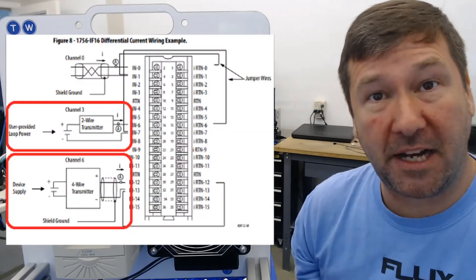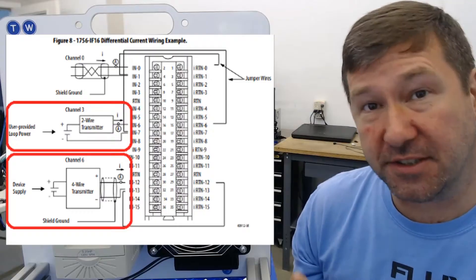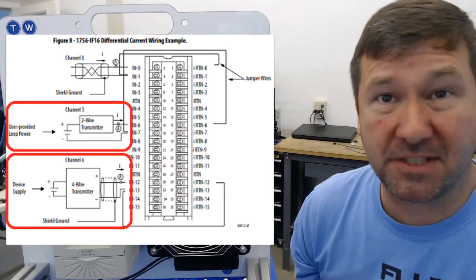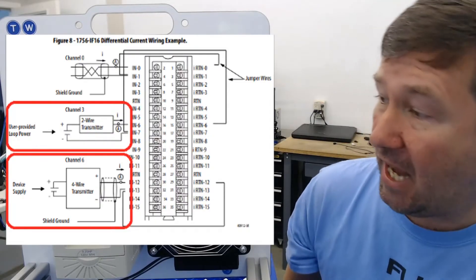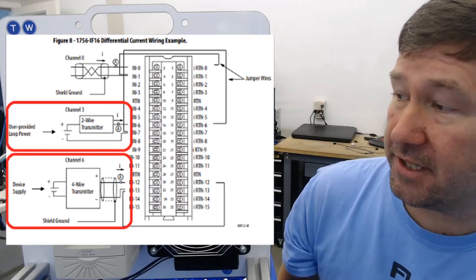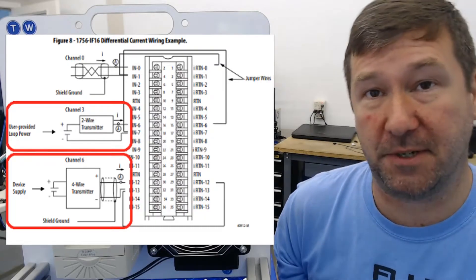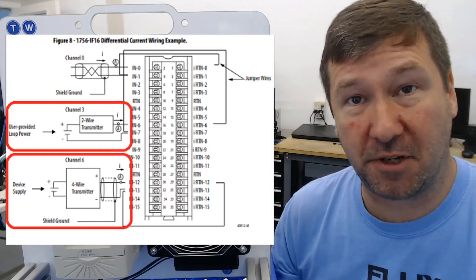If you look in the manual of your analog input module, you'll see a wiring diagram example, probably similar to this one right here. And we have a 2-wire transmitter example and a 4-wire transmitter example. And those are the two we're going to go over today.